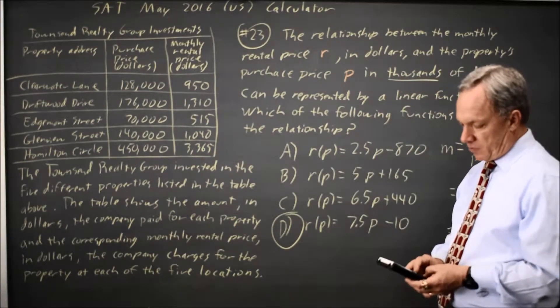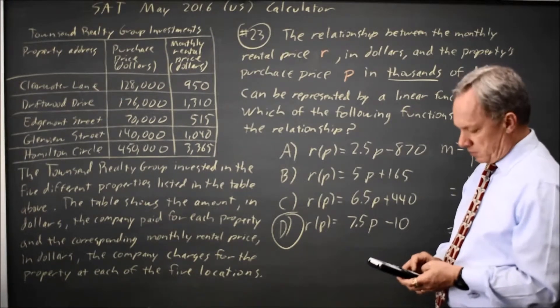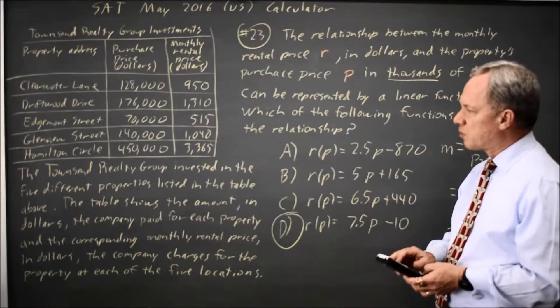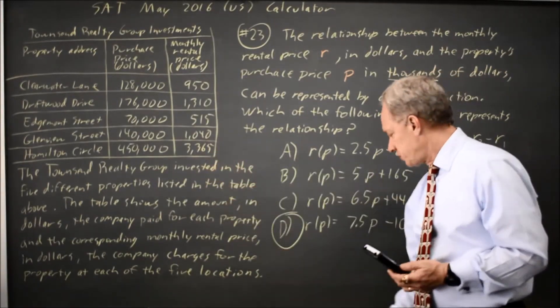Let's try choice B. 5 times 450 plus 165 and that's 2415 which is also not the rental price of 3365, so choice B is wrong.